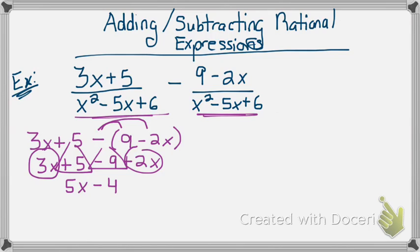So, that's what will go in my numerator, 5x minus 4. And I'll leave my denominator the exact same. x squared minus 5x plus 6. And I'm done.